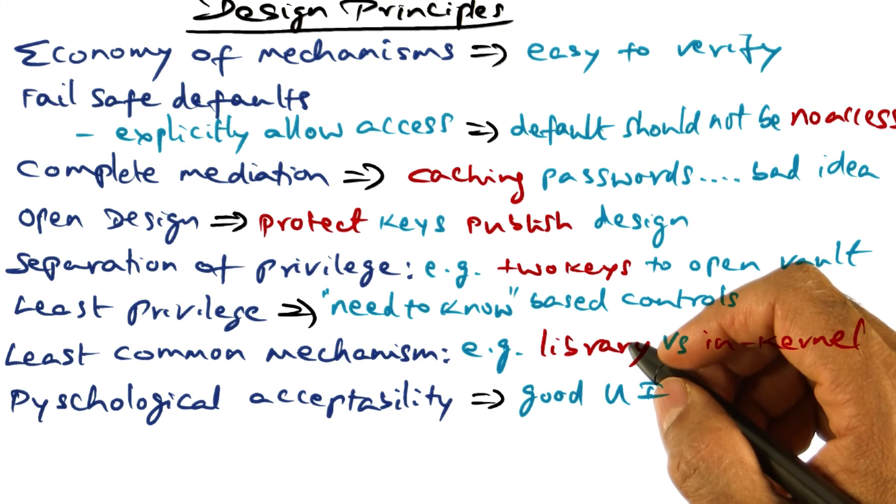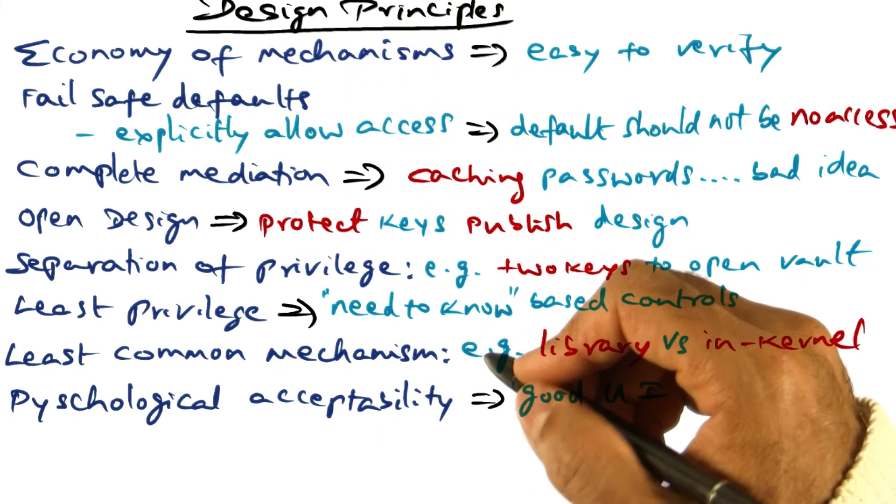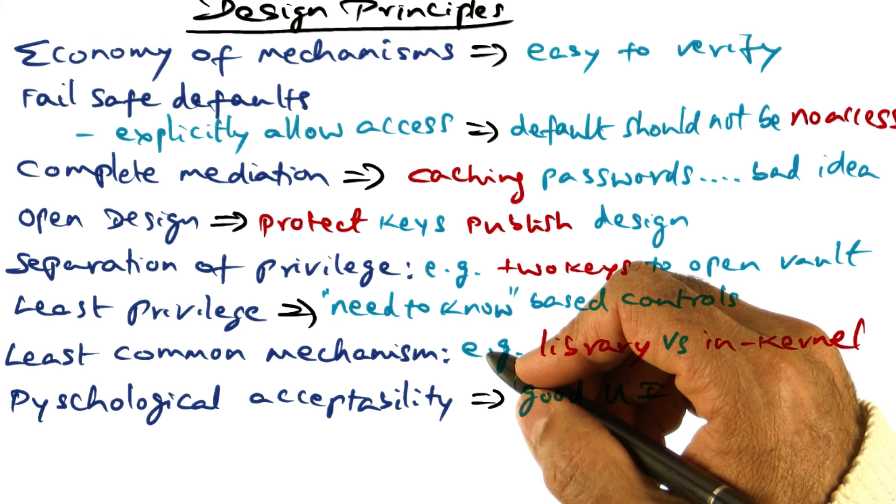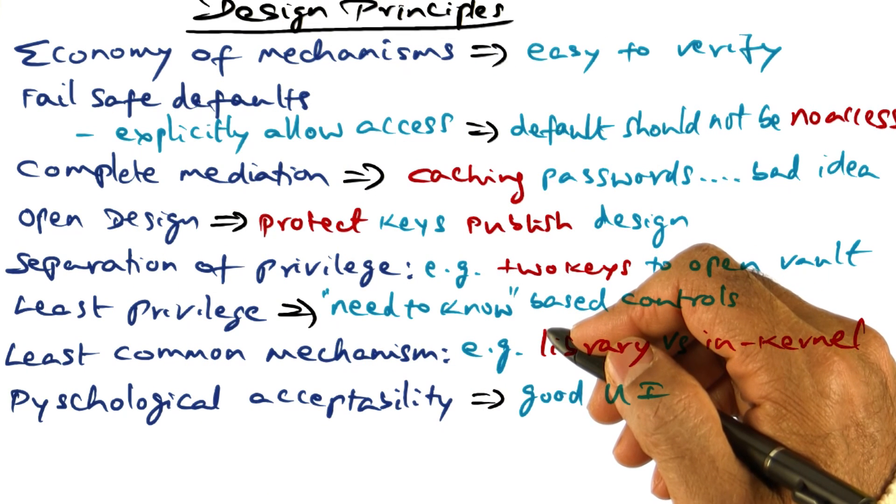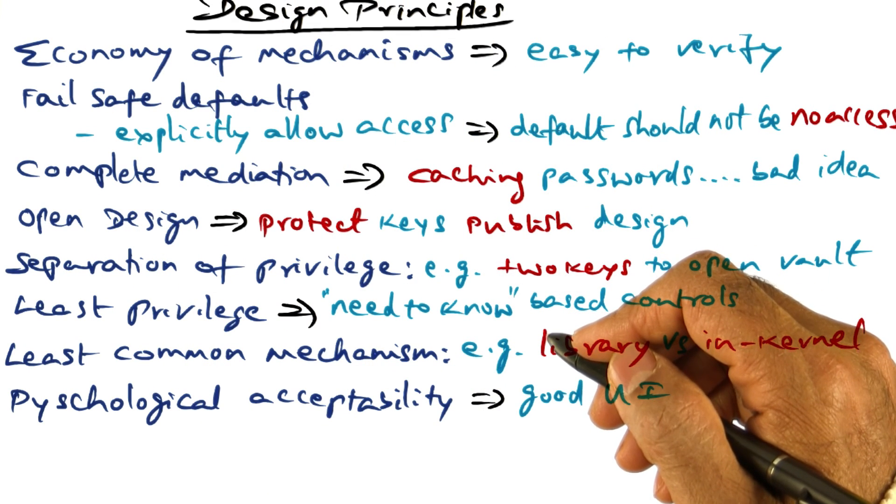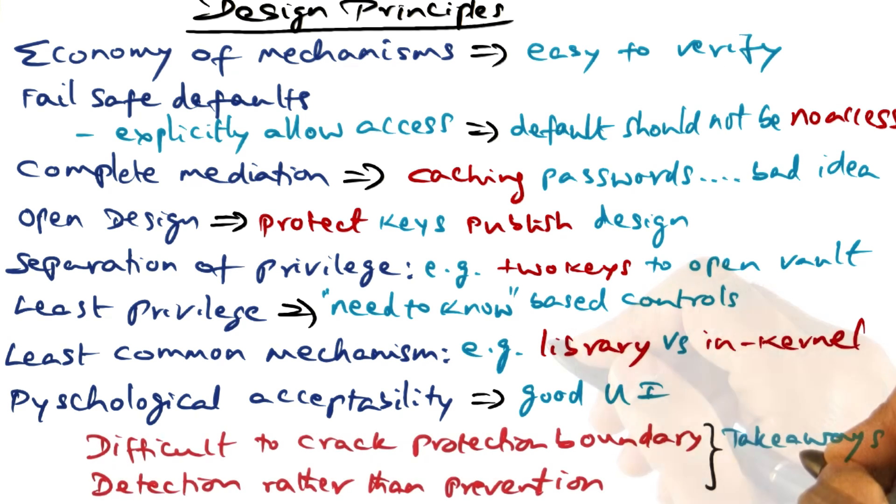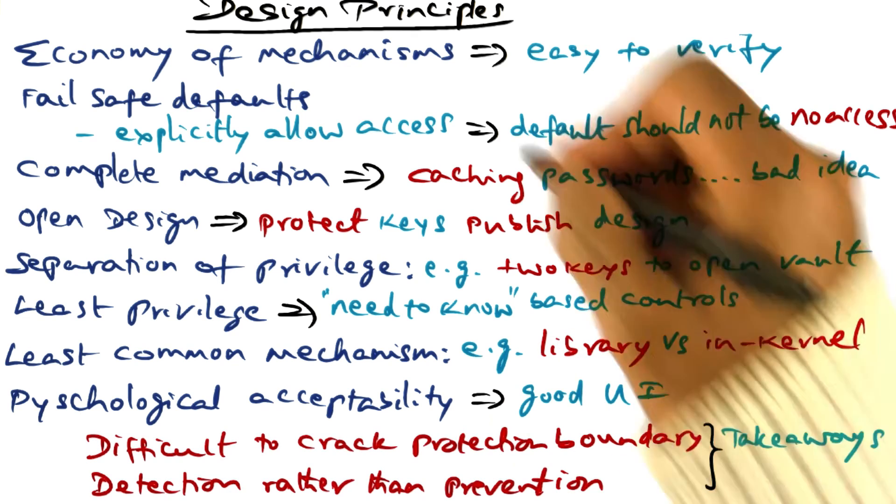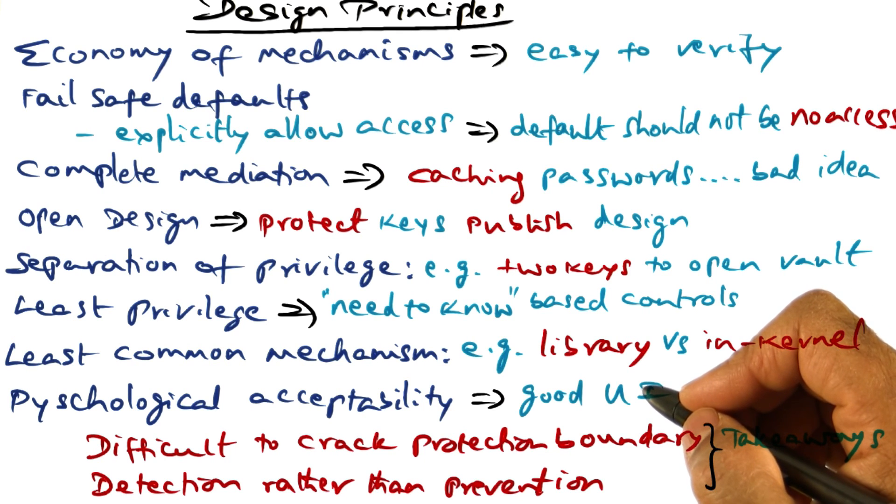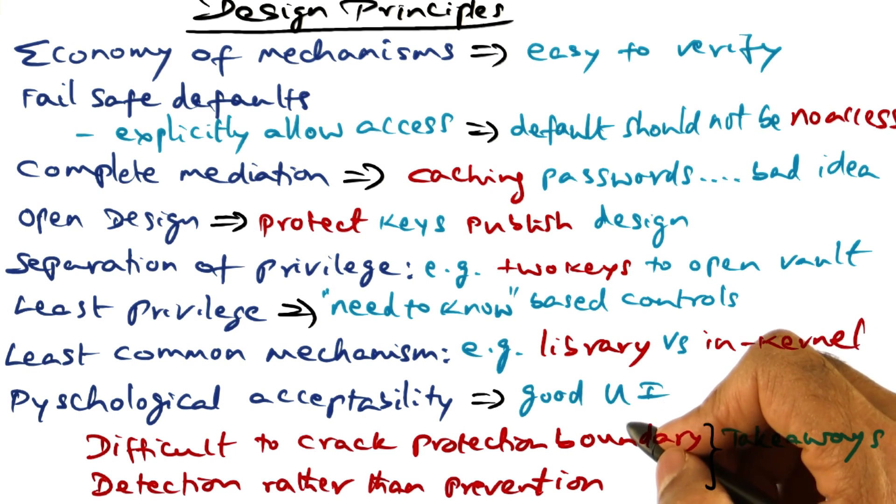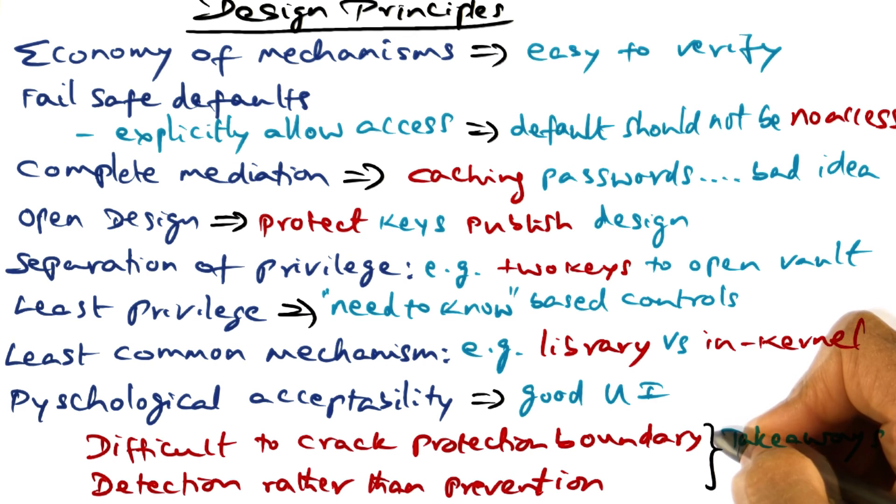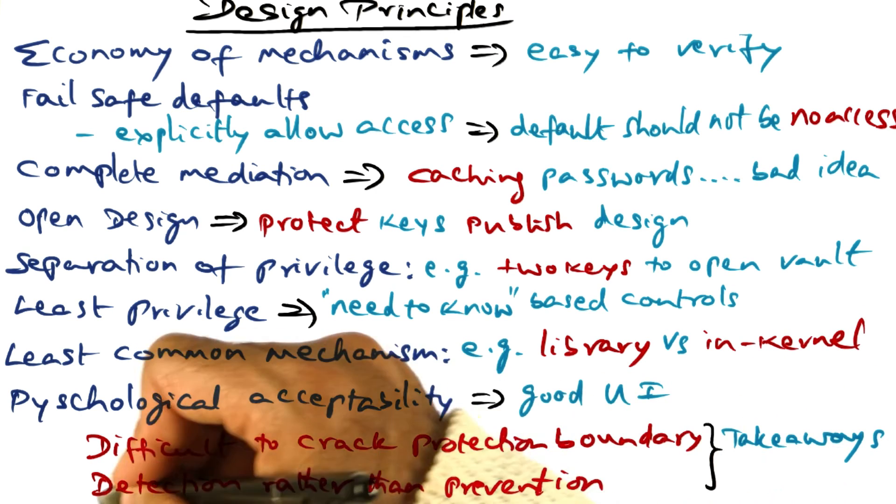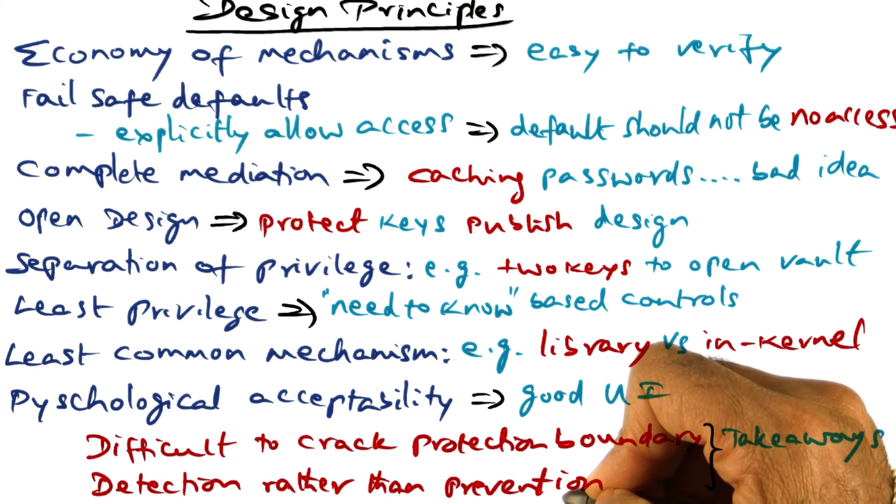The other thing that jumps out is that all of these principles laid out in the early 1970s are applicable to today's systems. These principles were crafted when computers were not even connected to the extent they are today. So the two key takeaways are: first, you want to build a system in such a way that cracking the protection boundary is computationally infeasible. Second, you build a system to detect violations rather than prevent them, because prevention is much harder, while detection is doable.